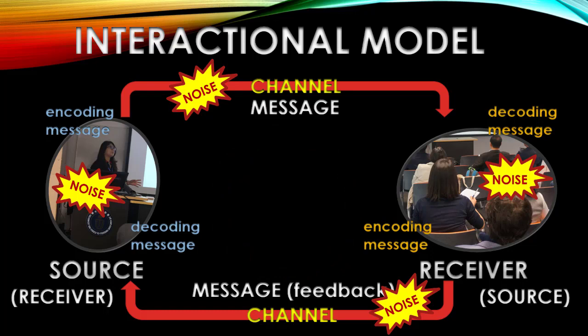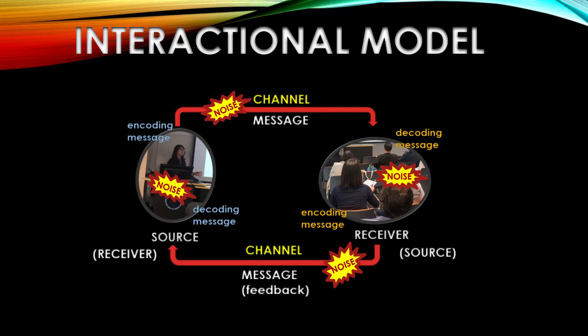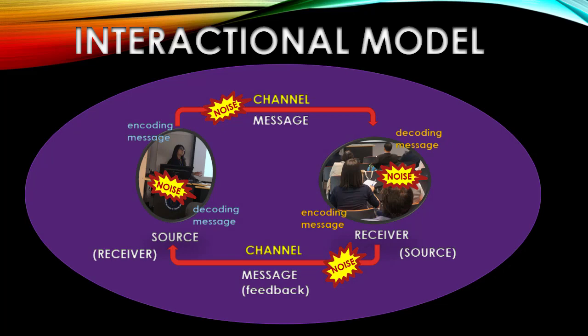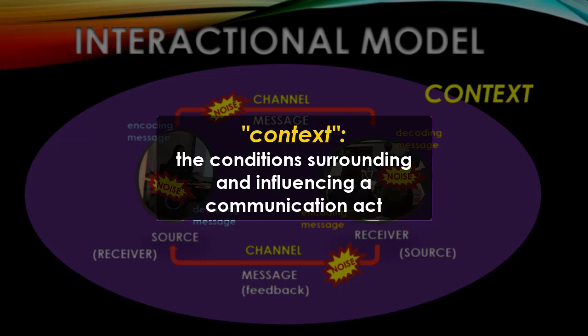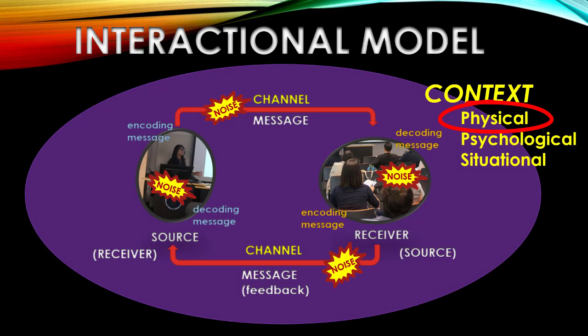In Schramm's work and those who follow that work, there's also another really important element that we don't see in the transmission model. And that is that all of this stuff that we've been talking about so far takes place within a specific context. Context is essentially all of the conditions that surround and have influences on any particular communication situation.